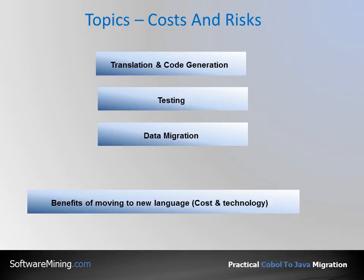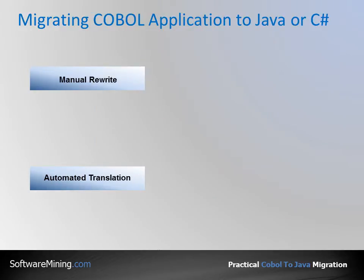The topics I'll be covering include cost and risk associated with each stage of the move to Java or C-Sharp, as well as some of the benefits of moving to the new language. In migrating COBOL applications to Java or C-Sharp, there are two paths available: manual rewrite and automatic translation.